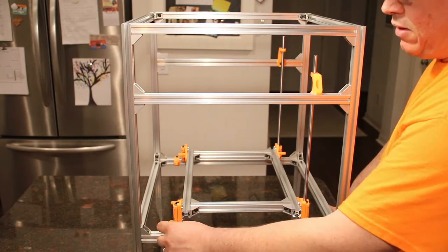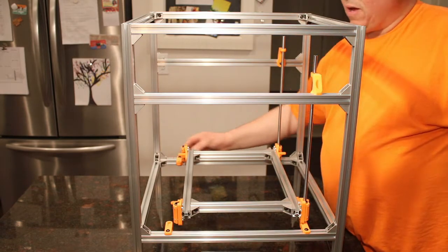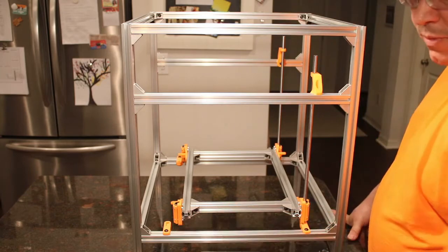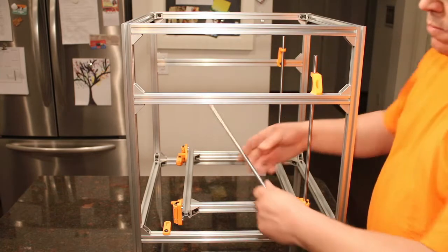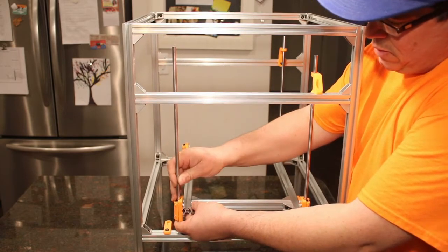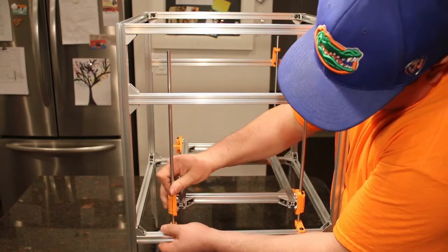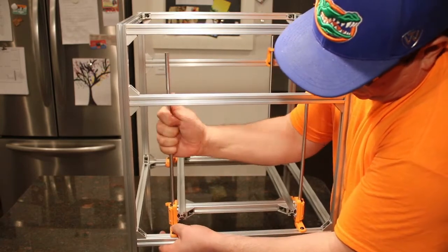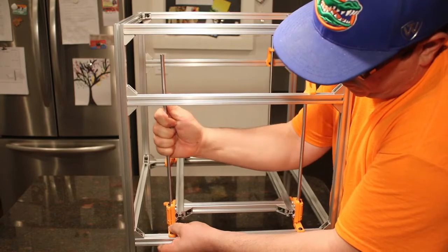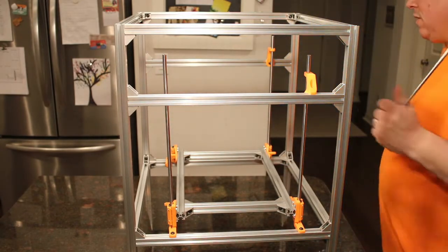So what I've done is I've mounted the lower Z-rod holders here and here on the opposite side, with just the screw that comes in from the top. Now I'm going to pass the Z-rod through the linear bearings and into the lower Z-rod holder. Just so it's all the way through. And I'm going to repeat the process on the other side.